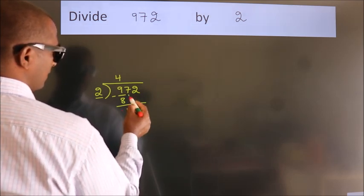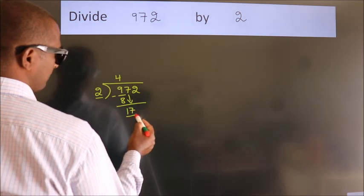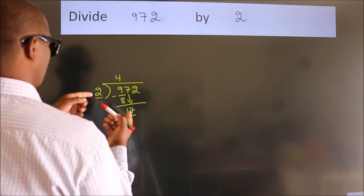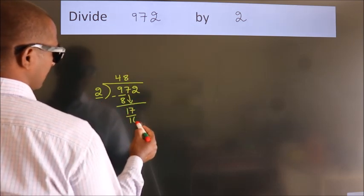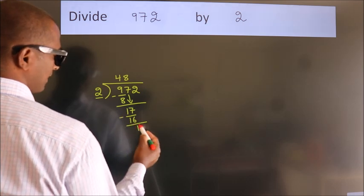After this, bring down the beside number. So 7 down, so 17. A number close to 17 in 2 table is 2 times 8 equals 16. Now we subtract. We get 1.